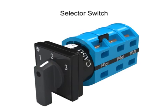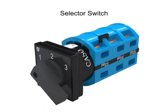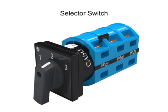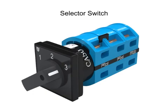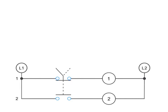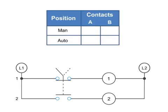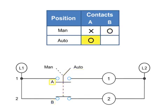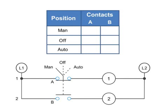A selector switch is a device with an operator that is manually rotated to activate electrical contacts. They are normally used to select either two or three different circuit conditions. Contact position on a selector switch can easily be illustrated using truth tables. This truth table illustrates the manual or automatic contact positions of a two-contact selector switch. If the selector switch is in the MAN position, A is X or closed and B is O or open. When the switch position is set to AUTO, A is O or open and B is X or closed. In a three-position selector switch, a third row is added to the truth table, giving a MANUAL position, an OFF position, and an AUTOMATIC position.